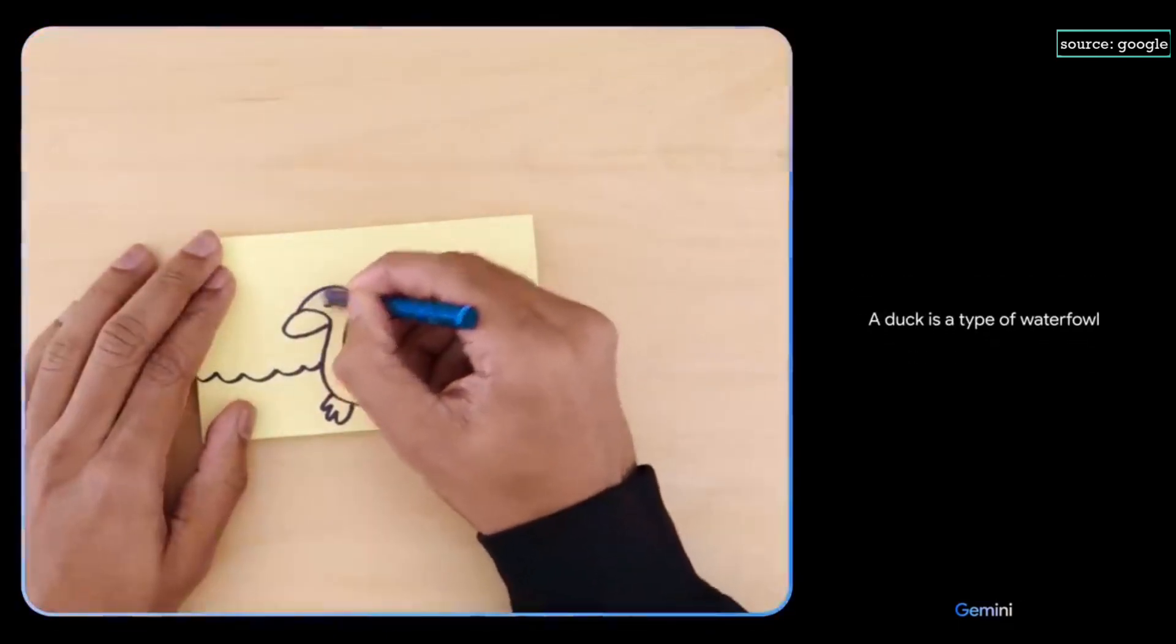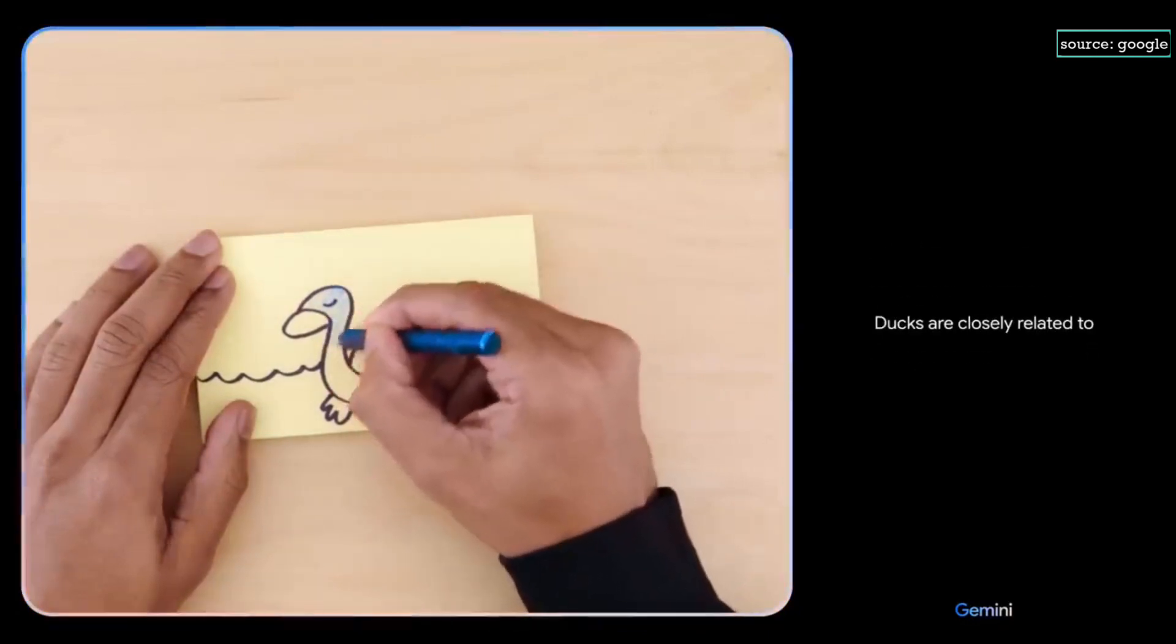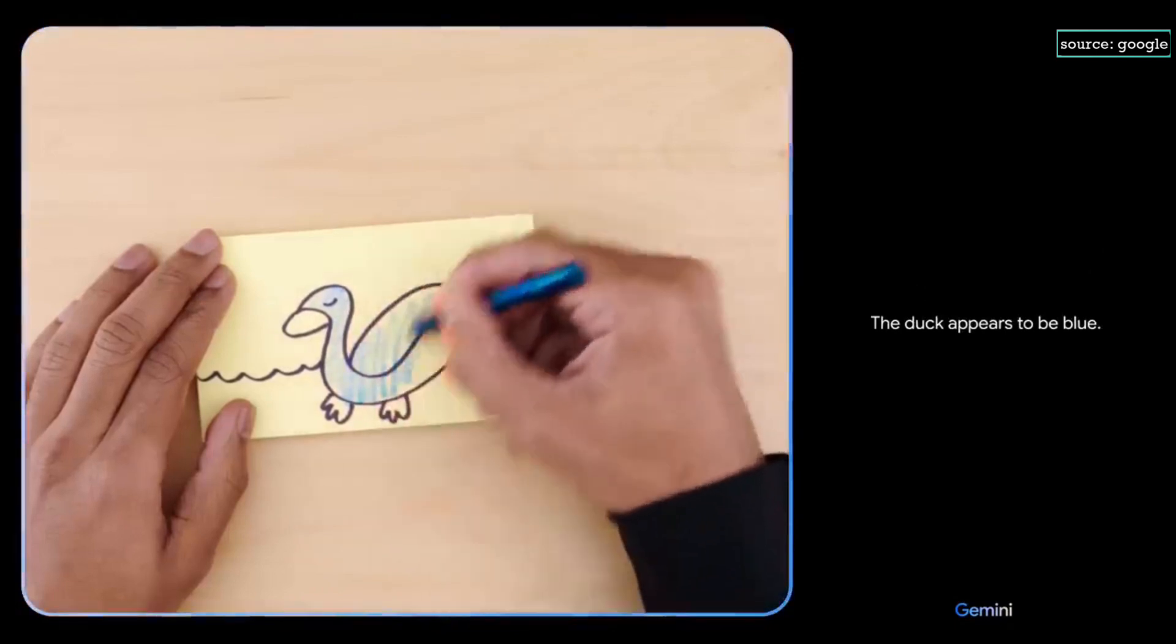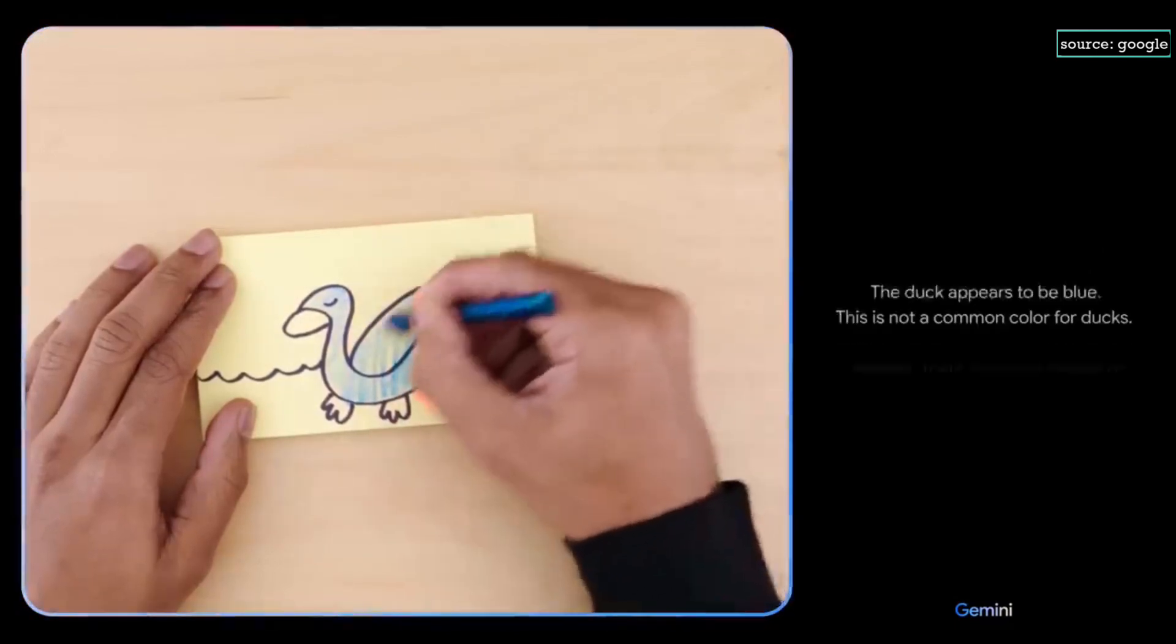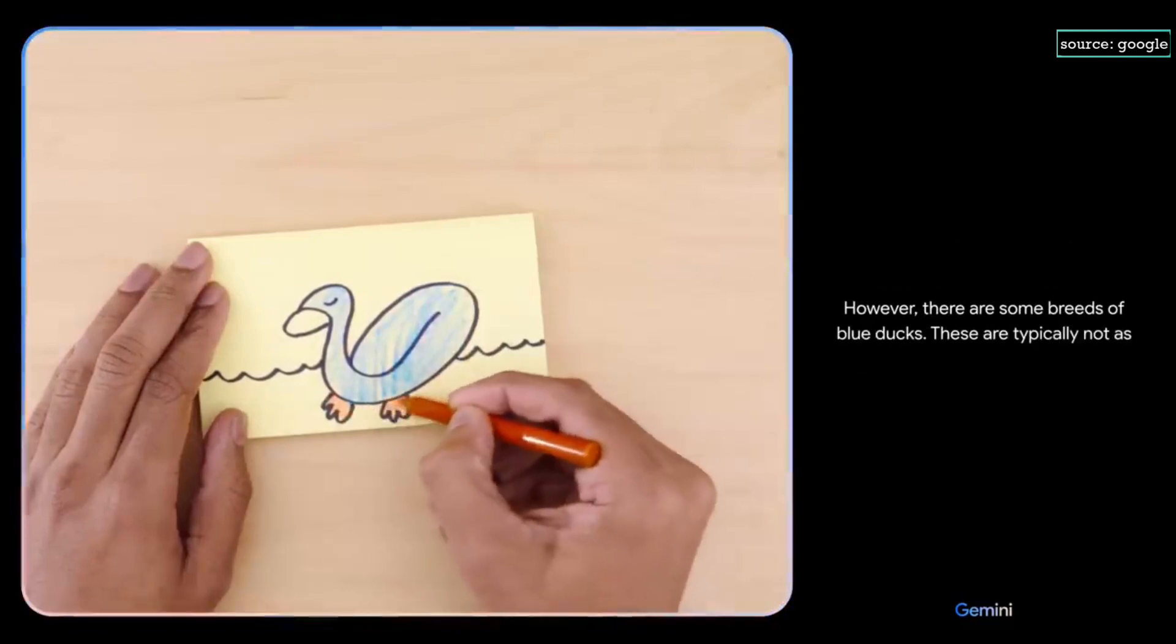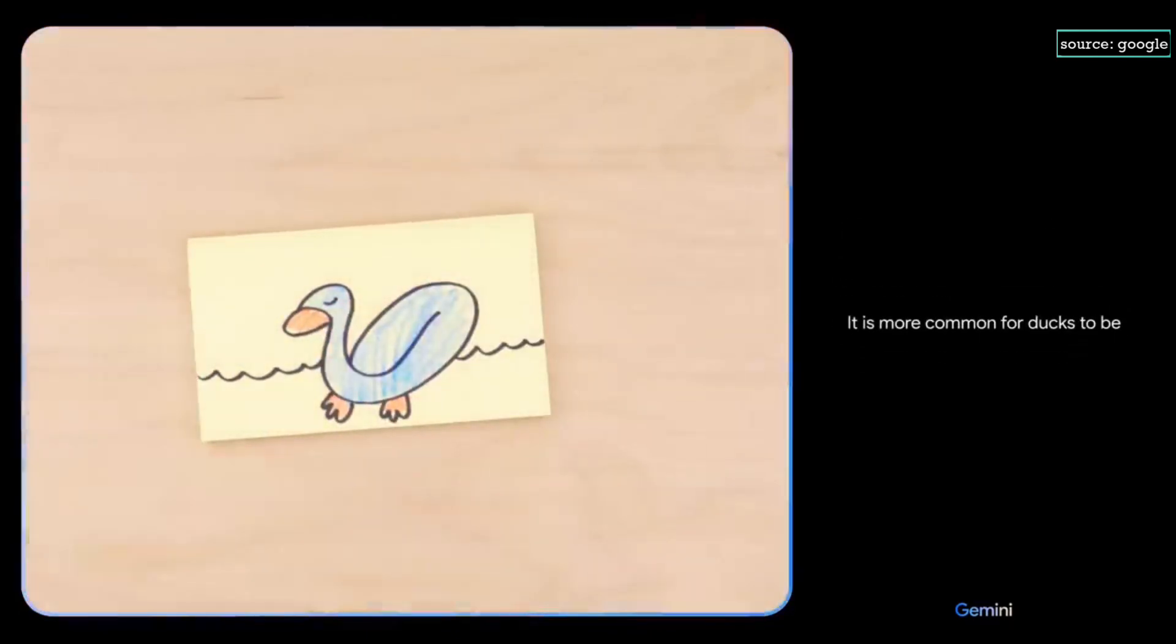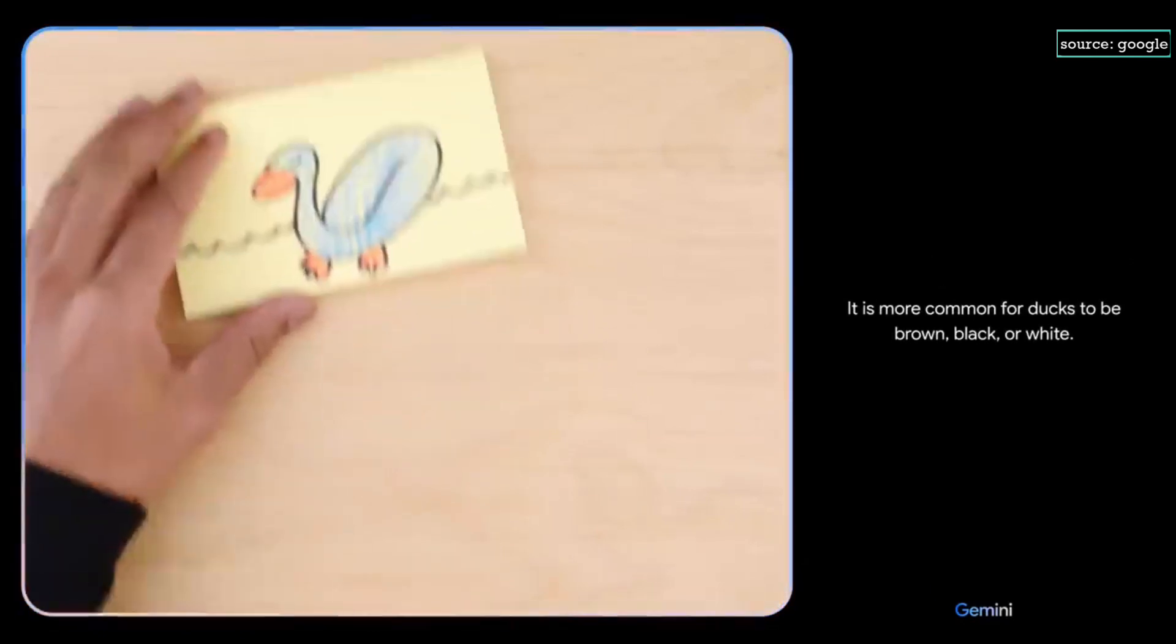A duck is a type of waterfowl in the family Anatidae. Ducks are closely related to geese and swans. The duck appears to be blue. This is not a common color for ducks. However, there are some breeds of blue ducks. These are typically not as common as other duck breeds. It is more common for ducks to be brown, black or white.